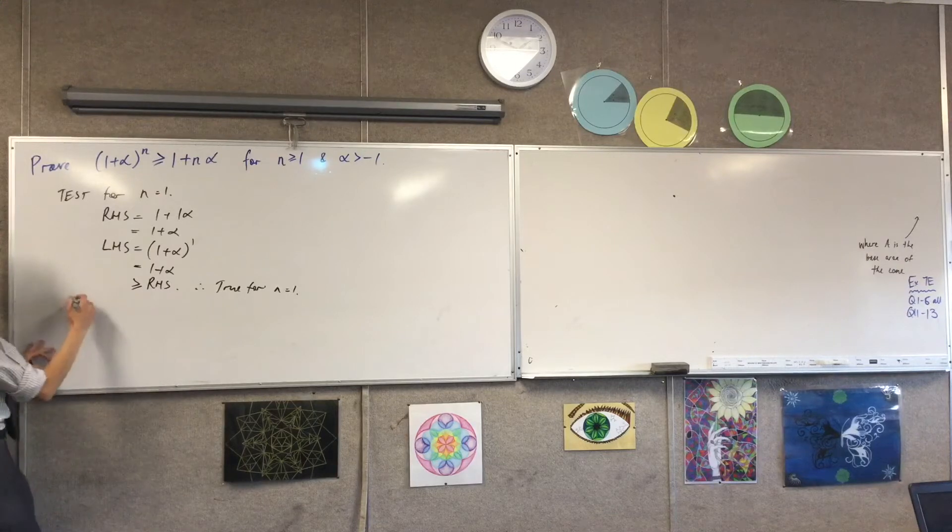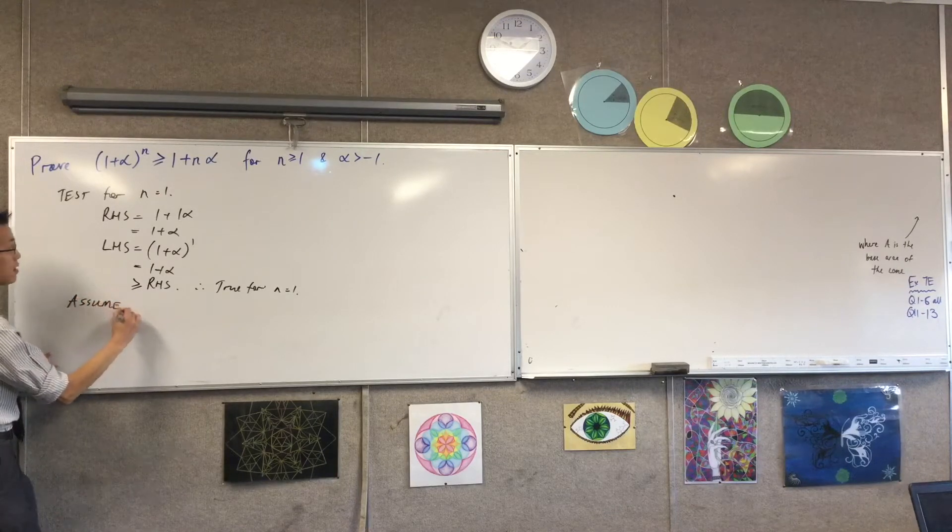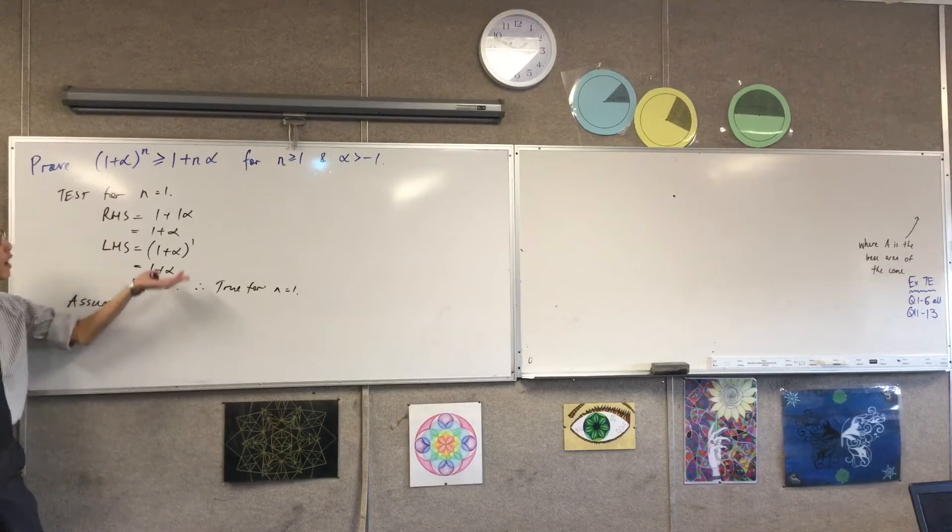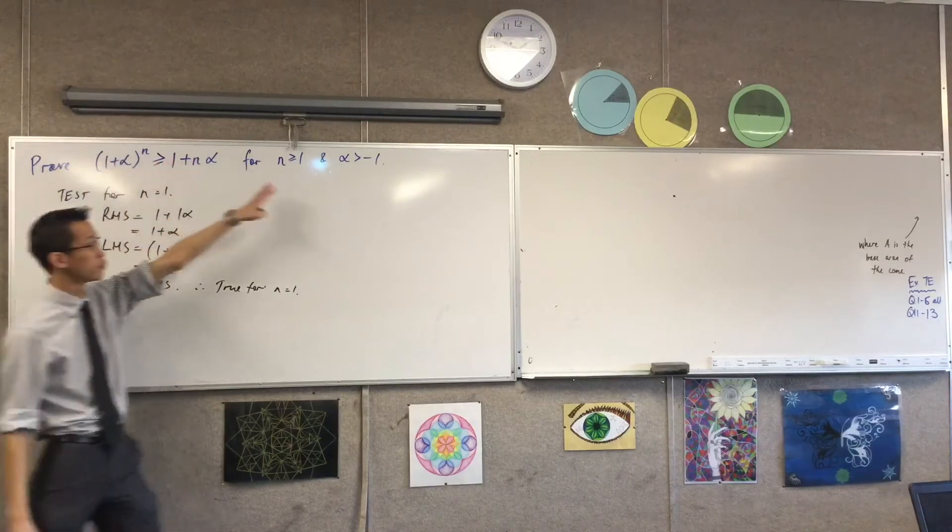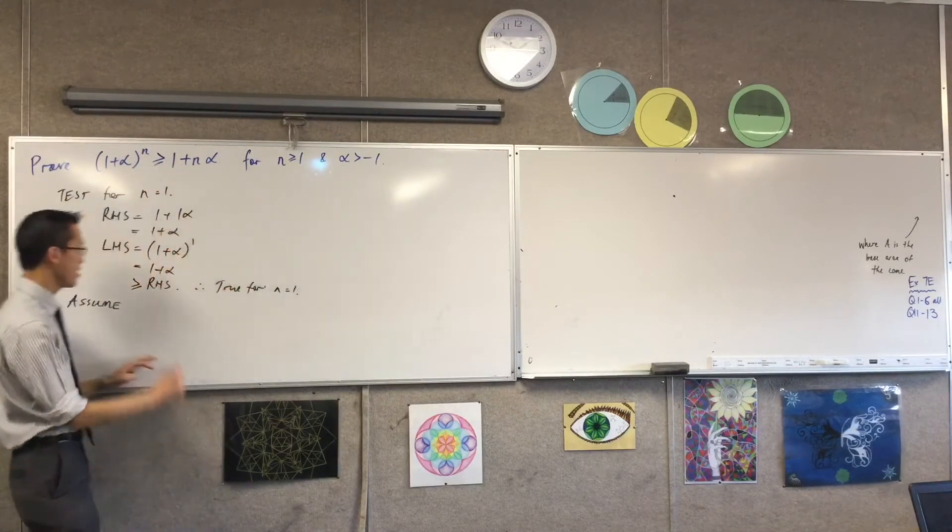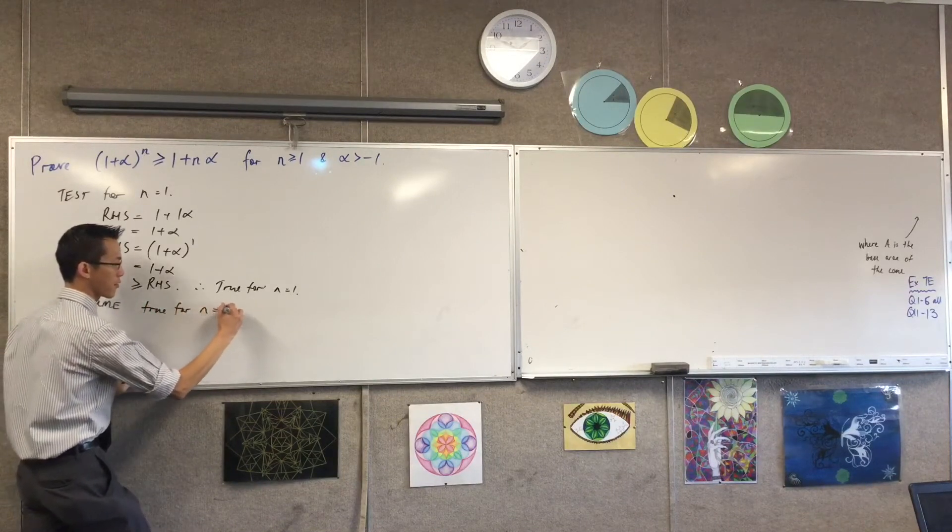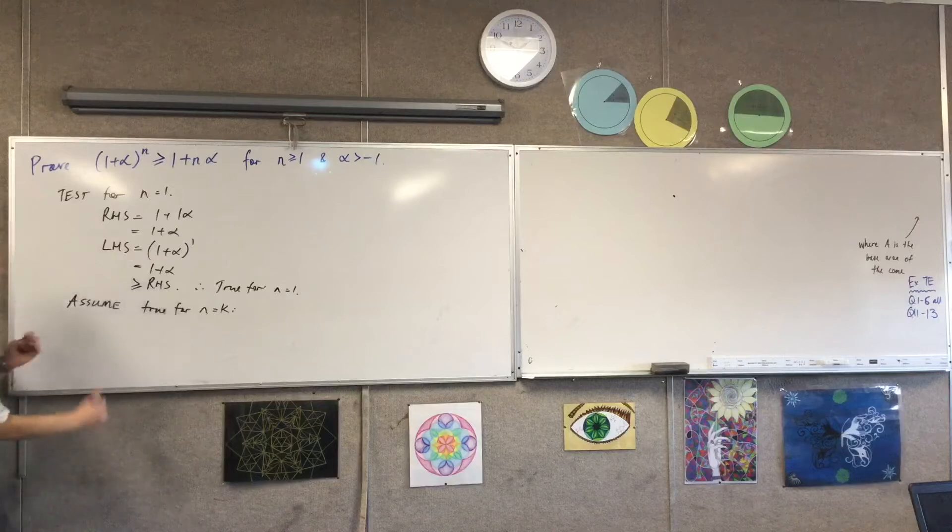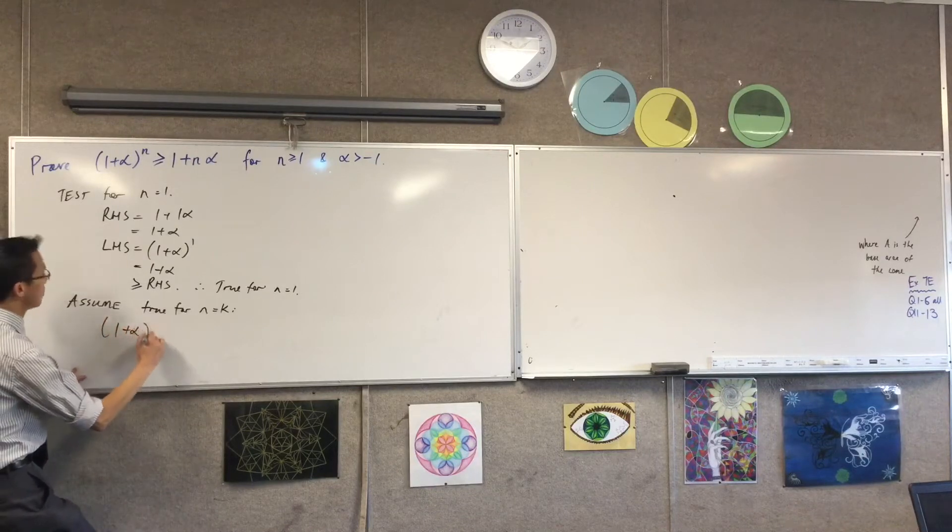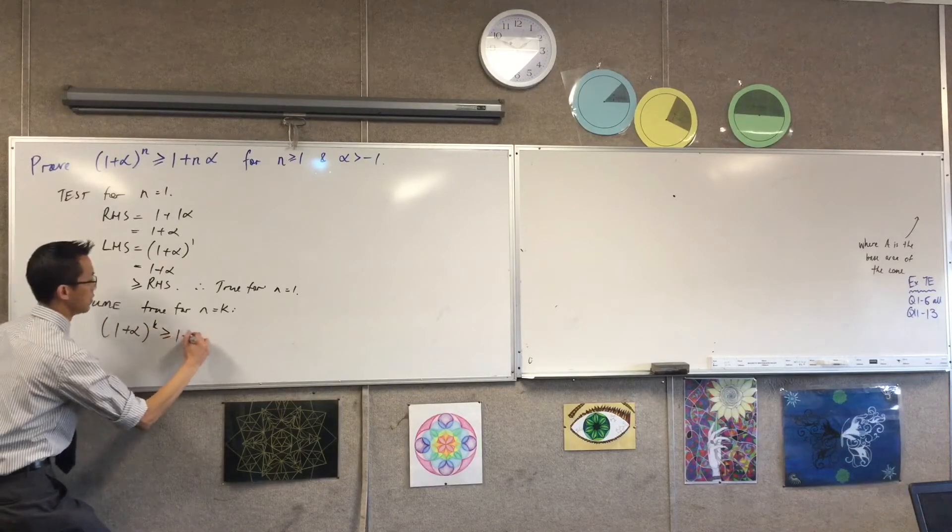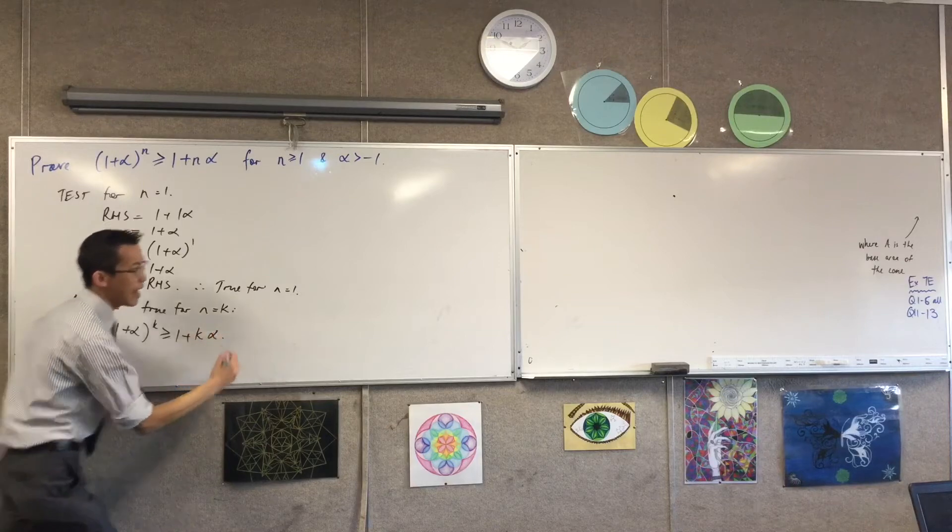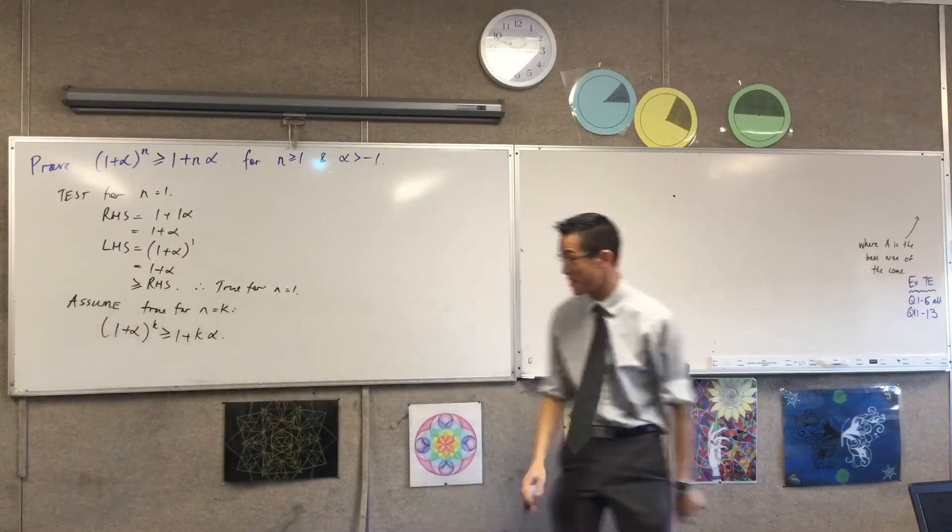Now I'm going to make my assumption, which again is going to work exactly the same way as for any other induction proof, even with this weirdo guy hanging there. So I'm going to assume that it's true for n equals k. It looks like this.